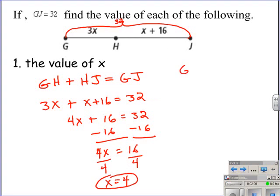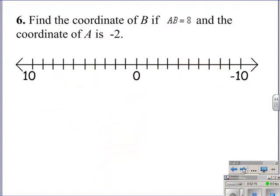If you wanted to find the measures of GH and HJ, you would substitute 4 into x. So for GH we would substitute 4 for the x to give us 3 times 4, therefore the measure of GH is equal to 12. You could do the same for the measure of segment HJ.